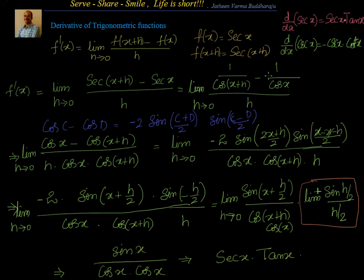Let's look at that again. We have to find out the derivative of secant x. What we did is by first principle: secant of x plus h minus secant x, divided by h. We know secant x is 1 by cos of x, so we substituted that. Then we get it in the form of cos C minus cos D, which is minus 2 sin(C+D)/2 sin(C-D)/2. Once we apply the formula, sin(h/2) by (h/2) becomes 1, and remaining terms, substituting h equal to 0, give secant x into tan x.